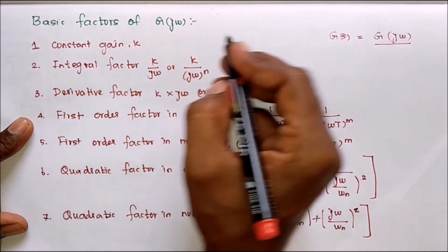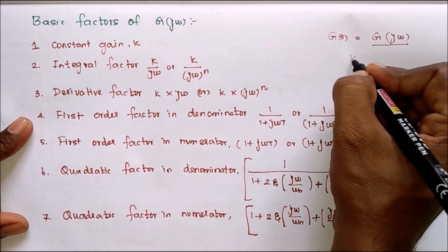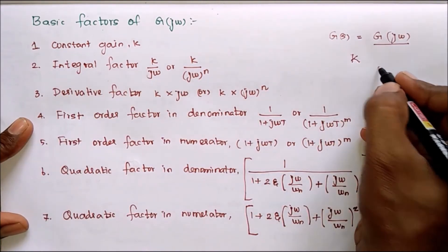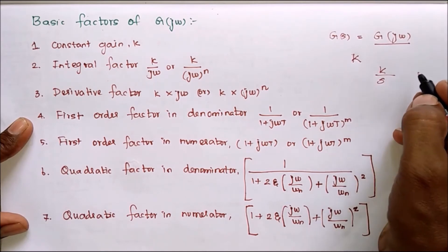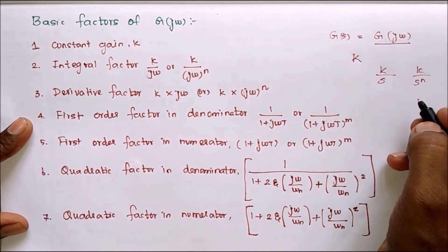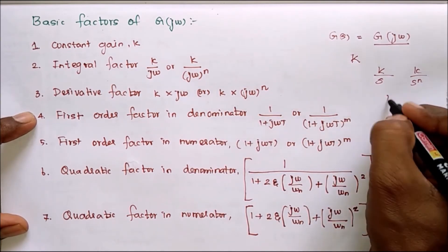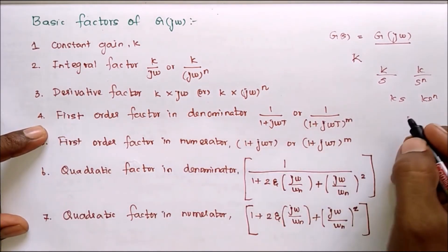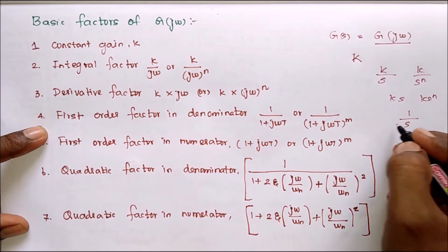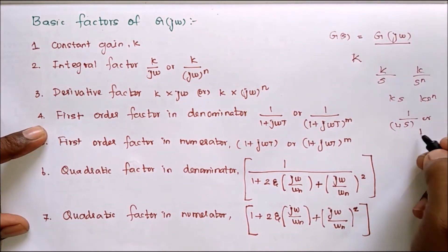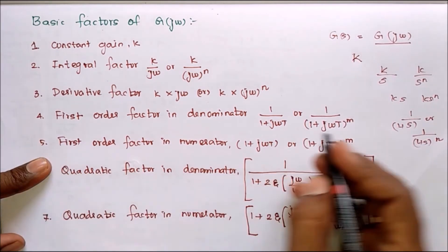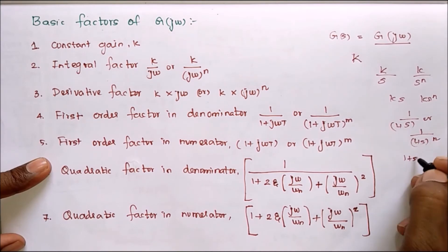Actually the example for constant gain is only constant value, it may be gain K or 1 or 2. Next integral factor means we will have K by S or K by S power n alone. Derivative factor means K times S or K into S power n. First order factor in denominator means 1 by (1 plus S term) or 1 by (1 plus S power n term). Next first order factor in the numerator, the same: 1 plus S or 1 plus S power n.